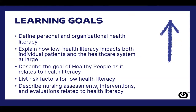There are five learning goals for this lesson. Make sure you write these down or screenshot it so you can come back to this checklist and make sure that you've gotten everything out of this lesson that you need to. The learning goals are to define personal and organizational health literacy, explain how low health literacy impacts both individual patients as well as the healthcare system as a whole, describe the goal of the government's Healthy People initiative as it relates to health literacy, talk about risk factors for low health literacy, and describe the nursing process as it's related to this topic.